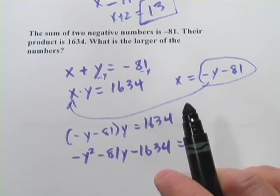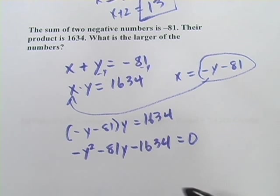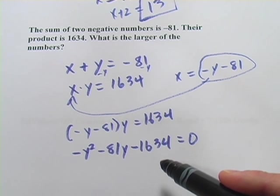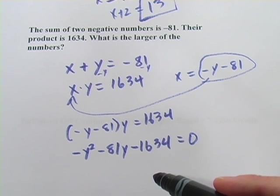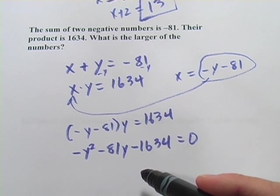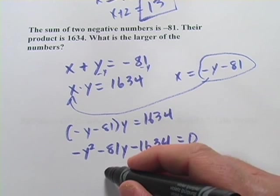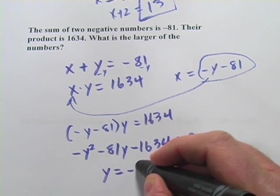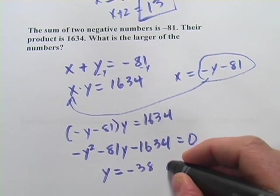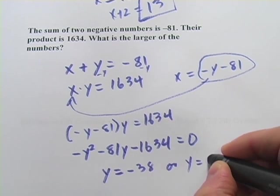They're all negative. I could multiply everything by a negative one, and they'd all be positive. It would amount to the same thing. If you plug this into a quadratic equation solver, or if you crunch through the numbers on the quadratic formula, what you'll find out is that y will equal negative 38 or negative 43.